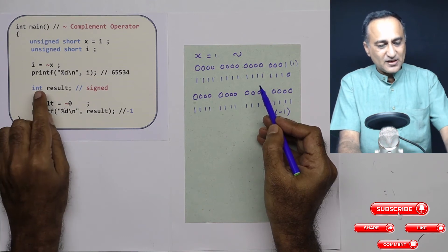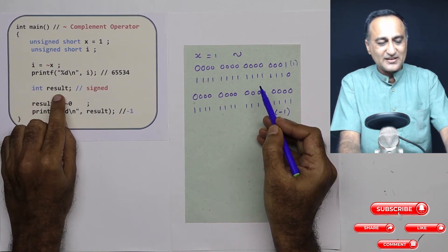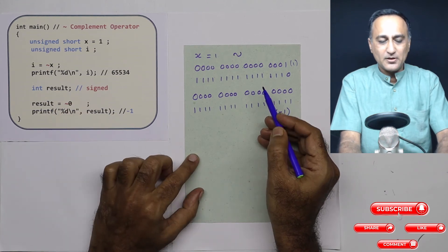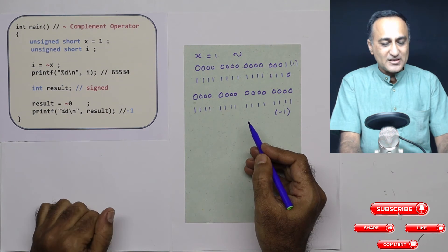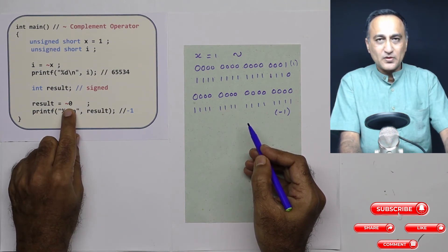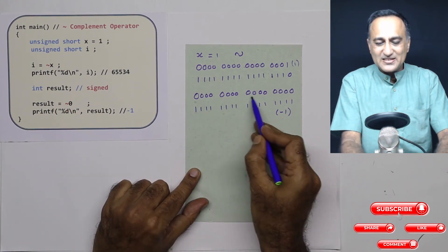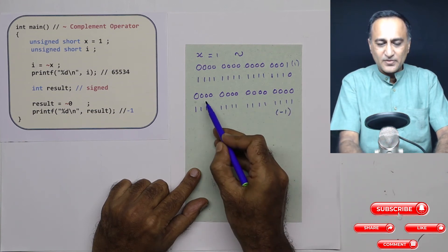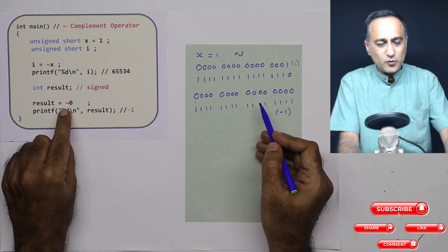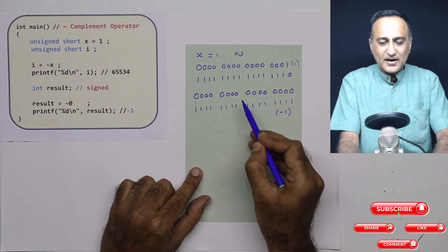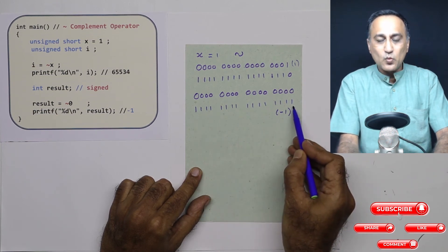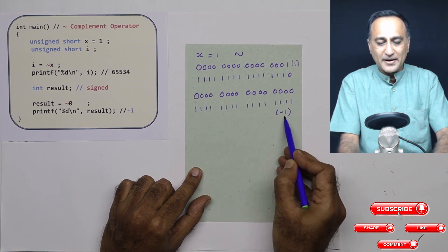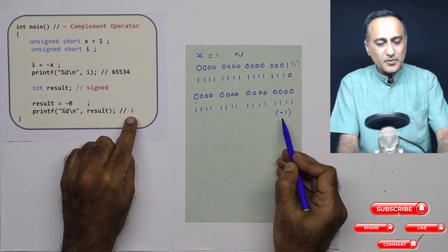Let's take one more example. Here I have a variable called int result. result is a signed variable — it's not unsigned, it is a normal signed variable. So the leftmost bit is going to be for sign. I have taken zero here. Zero is represented like this with all zeros. I'm again assuming only 16 bits — you can do it for 32 or 64 and will still get the same answer. So for all these 16 bits, when I do the tilde sign, the zeros become one and the ones become zero. Since everything is zero, everything ends up becoming one. This is in signed representation, or two's complement representation, equal to minus one. That's why when you print result, it's going to print the value minus one.